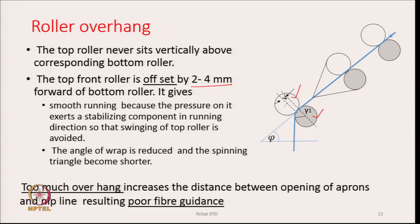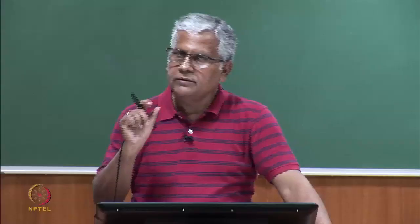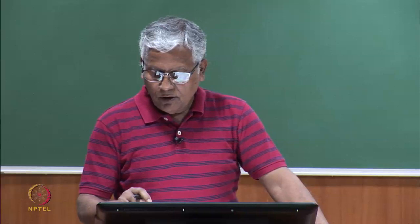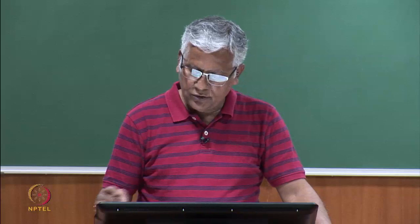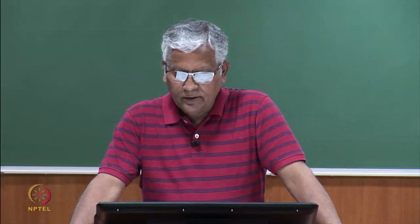However, too much overhang increases the distance between the opening of the aprons and the nip line. If this distance becomes too large, fibres during drafting may form drafting irregularity, especially shorter fibres. Therefore too much overhang is not practiced — it is usually kept between 2 to 4 mm.